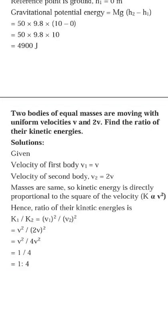Two bodies of equal masses are moving with velocities v and 2v. Find the ratio of their kinetic energies. KE formula is half mv². For the first case: half mv²; for the second: half m(2v)². Dividing: half and m cancel, leaving v² upon 4v². Cancelling v² gives the ratio 1 to 4.